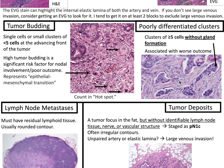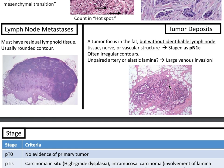Tumor budding consists of single cells or small clusters of fewer than five cells at the advancing front of the tumor. High tumor budding is a significant risk factor for nodal involvement and poor outcome, representing epithelial-mesenchymal transition. Count in the hotspot. Poorly differentiated clusters are clusters of five or more cells without gland formation, associated with worse outcome. Lymph node metastasis must have residual lymphoid tissue and usually has a rounded contour. Tumor deposits are a tumor focus in the fat without identifiable lymph node tissue, nerve, or vascular structure, staged as pN1c. They often have irregular contours. If you see an unpaired artery or elastic lamina, it is large venous invasion, not a tumor deposit.